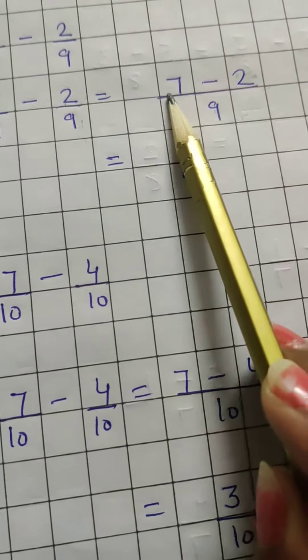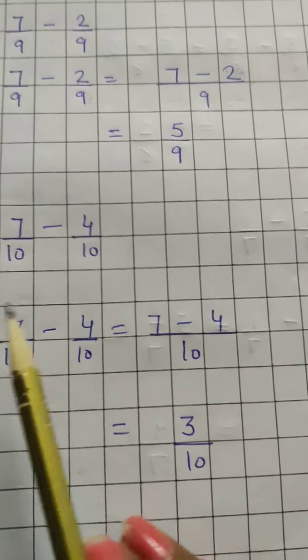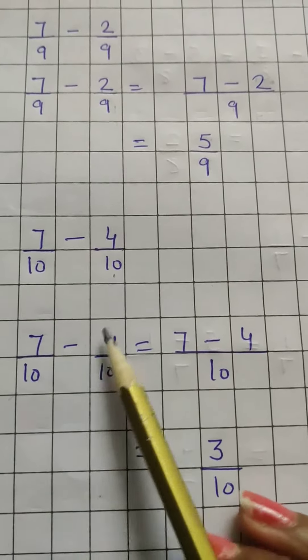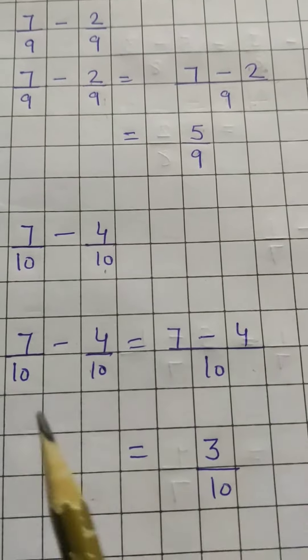Look at the next one, seven by ten minus four by ten. In the same way, we will subtract. Seven by ten minus four by ten, so ten comes once, and in the numerator we have seven minus four as is.